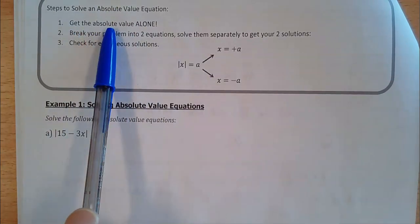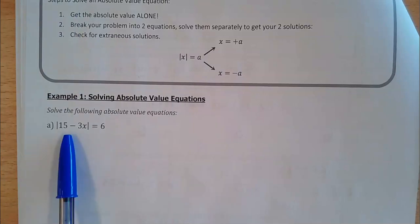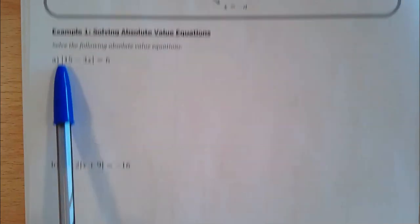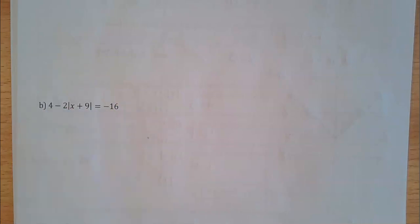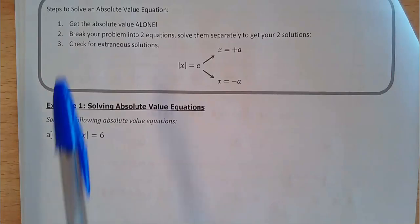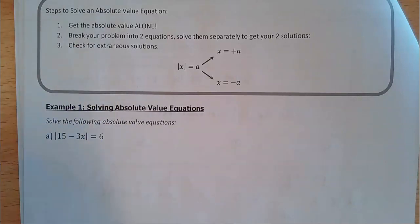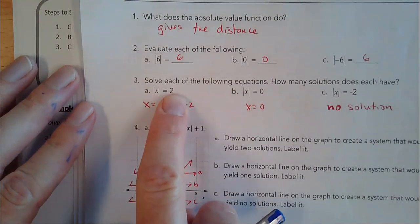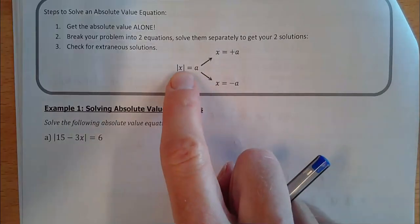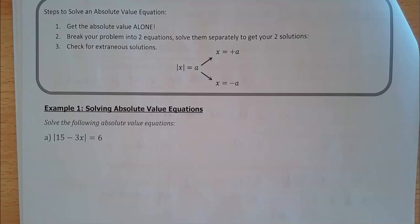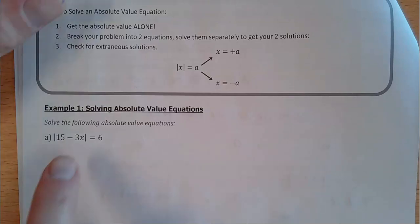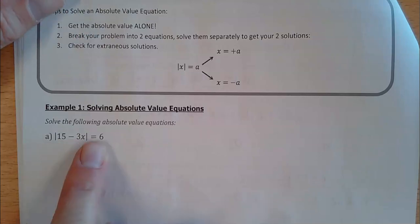So to do this algebraically: first, make sure the absolute value is by itself — there's nothing else outside the absolute value. In part b it's not by itself, so I have to do some work first: subtract the 4 over, then divide by negative 2 to get the absolute value alone. Once you do that, whatever is in the absolute value must have equaled either the positive or the negative of the right side.